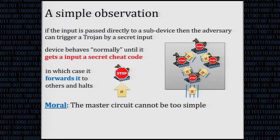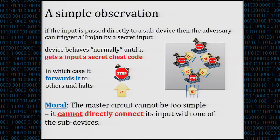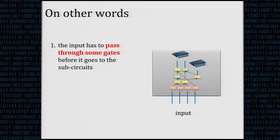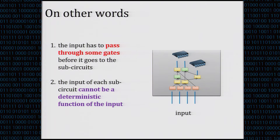The master circuit needs to perform some non-trivial operations. In particular, it cannot directly connect the input to a sub-device. The input needs to be processed by some gates before going to the sub-circuits. Furthermore, the input to any sub-circuit cannot be a deterministic function of the whole input — we need the input to be split across at least two devices after some computation.